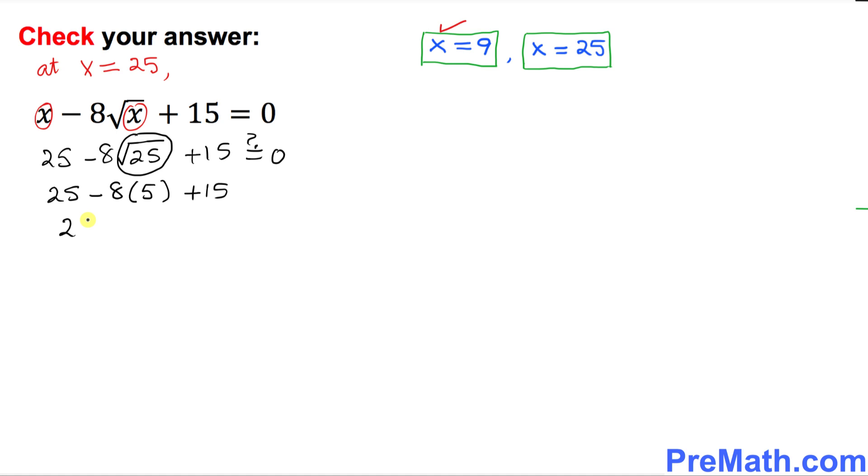So this is 25 minus 40 plus 15. That is going to give you 0 on the left hand side. And we know 0 is on the right side as well. My question is, is this statement true? Yes, indeed, this is true. So that means our x equals 25 is also a good solution.